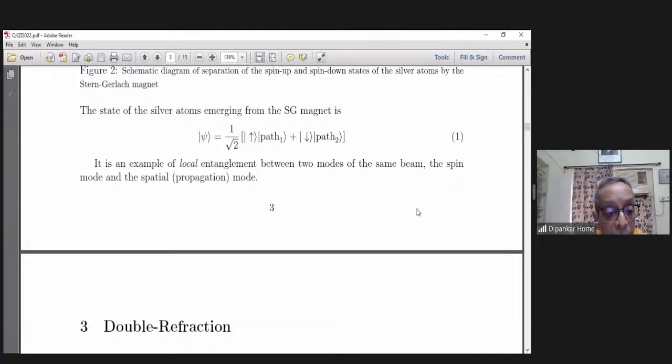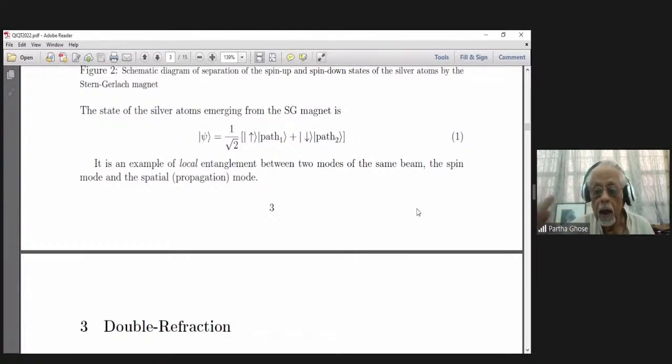The same beam has two modes: the spin mode and the spatial or propagation mode. Now, this you can see is a state from which neither the spin nor the spatial mode can be factored out. So this is an entangled state.